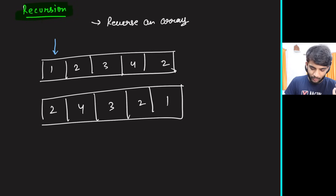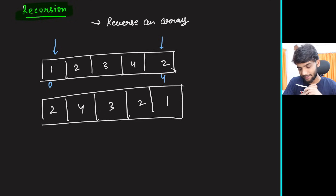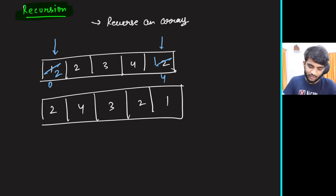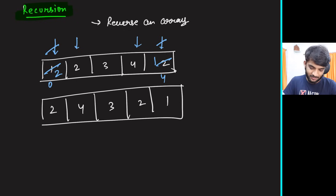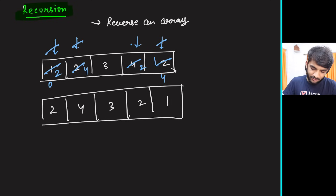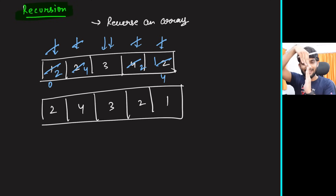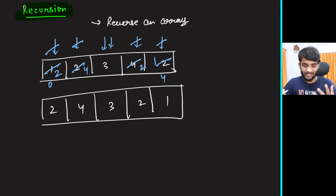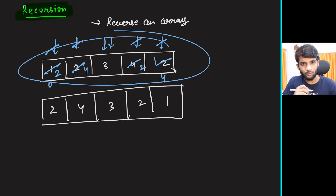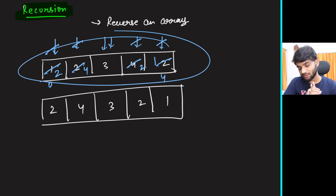You keep a pointer at the zeroth index and a pointer at the last index (n minus one), and you basically swap them. After that you move the left pointer ahead and the right pointer back, and swap again. You continue until the pointers overlap or cross — at that point the left and right halves have been swapped and the array is reversed.